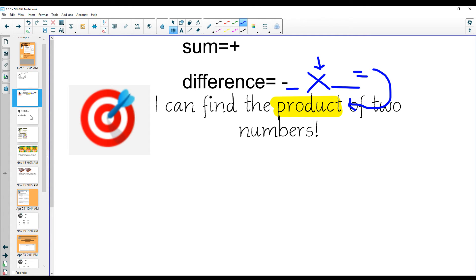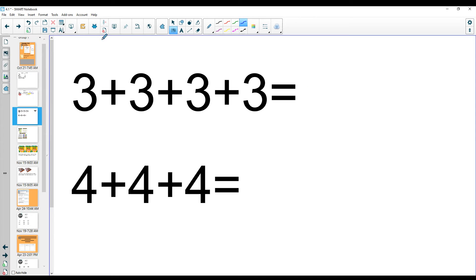Alright, so let's look at some things. Here we have three plus three plus three plus three. Let's think about this. Three plus three is six. Six plus three is nine. Nine plus another three equals twelve. You added three how many times? One, two, three, four. You added three four times.